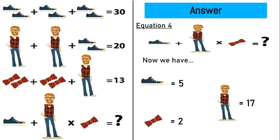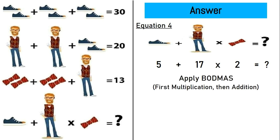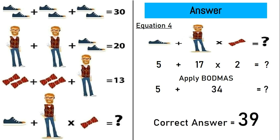Now we have a tie equal to 2, a shoe equal to 5, and a man with tie and pair of shoes equal to 17. Putting all the values in equation 4, we have 5 plus 17 multiplied by 2 equals question mark. By BODMAS, we first do the multiplication, then the addition. So 5 plus 34 equals question mark. The correct answer of this puzzle is 39.